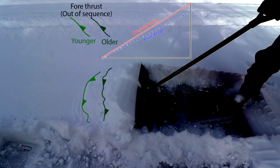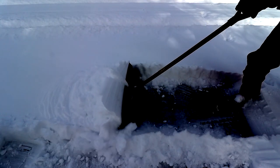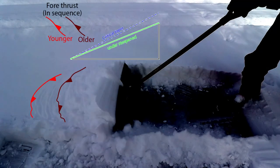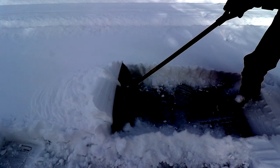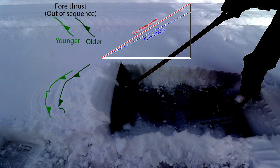Some liken this to tectonic collapse of mountain belts, but this is not nearly as analogous as the other details of deformation we've been focusing on. There's not much more to say. We can just watch as the deformation cycles through the predictable sequence of in-sequence thrusting leading to an under-steepened wedge, and out-of-sequence thrusting leading to an over-steepened wedge.